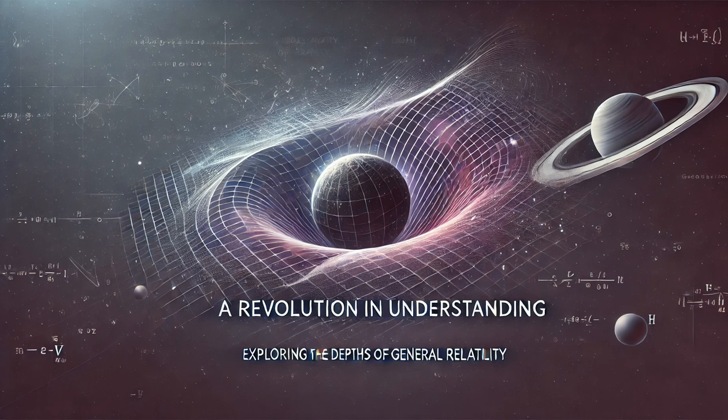Enter Albert Einstein. Building upon his earlier work on special relativity, which dealt with the relationship between space and time for objects moving at constant velocities, Einstein embarked on a quest to reconcile gravity with the principles of special relativity. This quest culminated in the formulation of general relativity, a theory that profoundly altered our understanding of the universe.